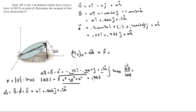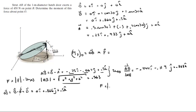Dividing vector AB by its magnitude 0.563 gives the unit vector: −0.444i − 0.119j + 0.888k. The force is then 450 times this unit vector, giving the Cartesian vector form of the force: −200i − 53.5j + 400k Newtons.